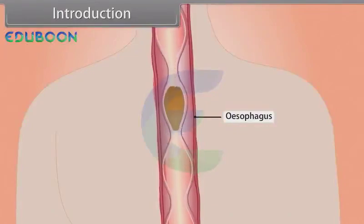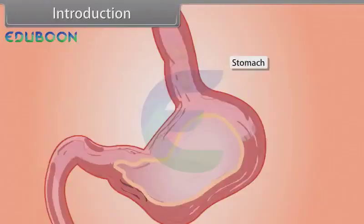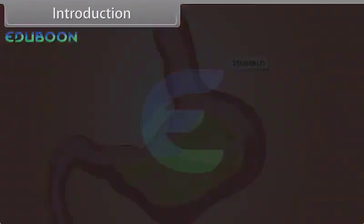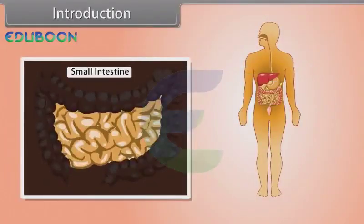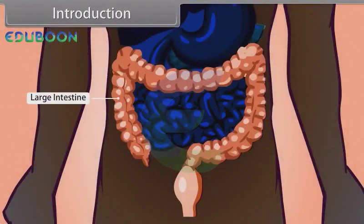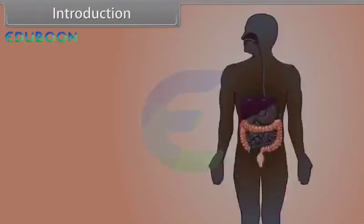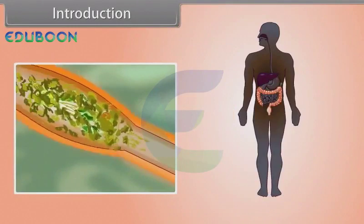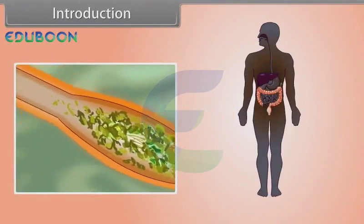Through the mouth and then through the esophagus, food goes to the stomach where digestion of protein starts, and then food enters into the small intestine. From there, undigested food goes to the large intestine and is then ejected out from the body through the anus. After the digestion of food, the nutrients are absorbed from the digested products.